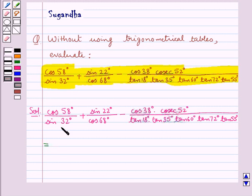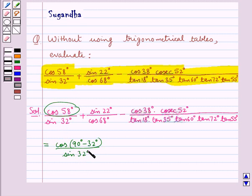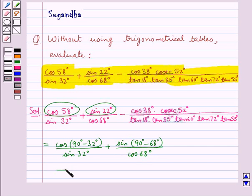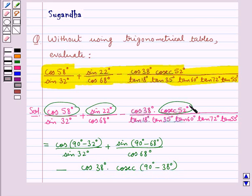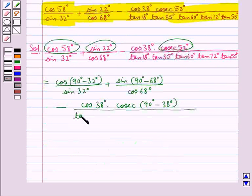This is further equal to: cos 58° can be written as cos(90° - 32°) upon sin 32°, plus sin 22° can be written as cos(90° - 68°) upon cos 68°, minus cos 38° × cosec(90° - 38°). That is, cosec 52° is written as cosec(90° - 38°), all upon tan 18°.